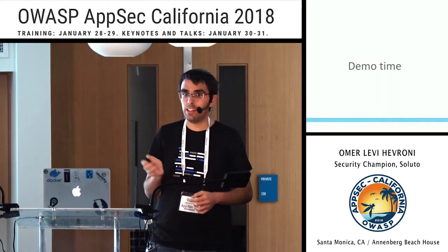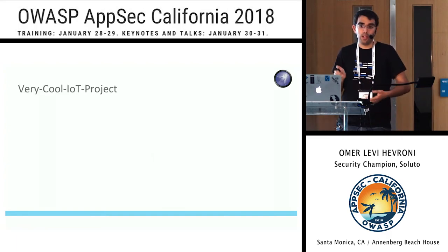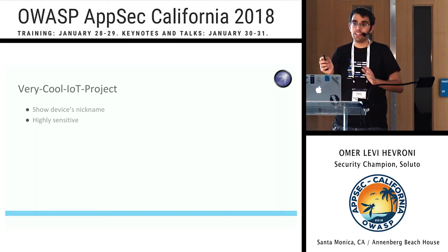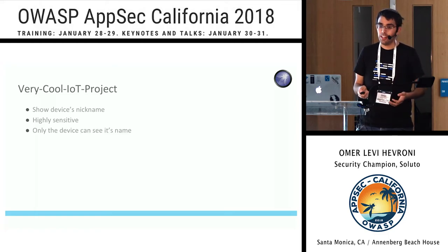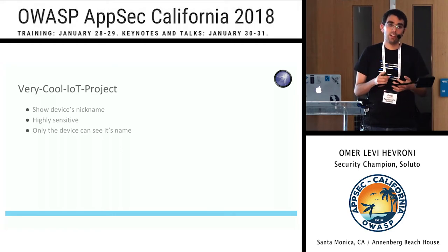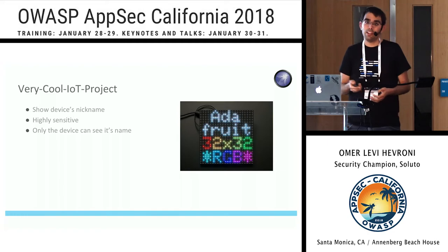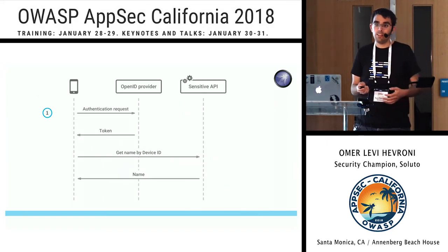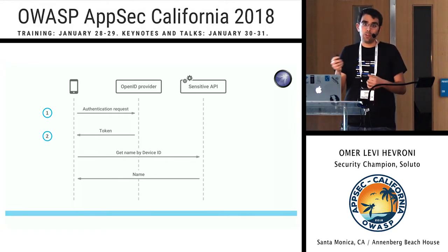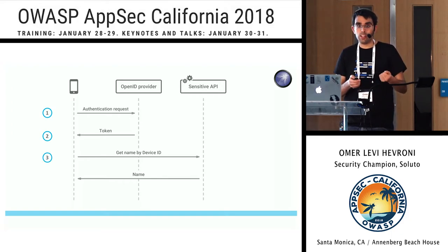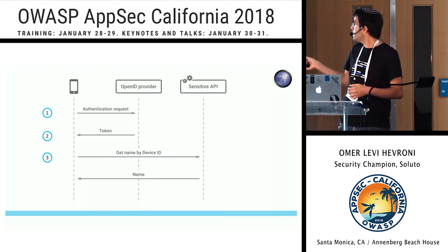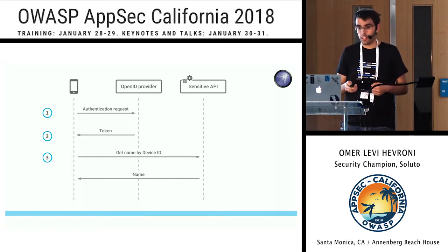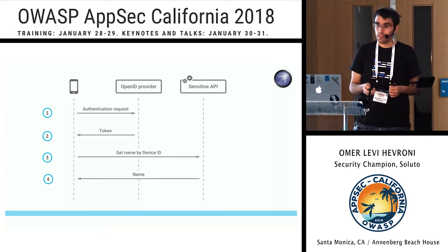Now to the interesting part - let's do a demo. For the demo, let's assume I want to build the most awesome IoT project in the world - it shows a device nickname. Because it's a nickname, it's highly sensitive; we don't want anyone to see what the nickname of your device is. We want to make sure only the device can request its own nickname. The device will perform the authentication request like I showed before, get a token, and use that token to request the nickname. The server - the sensitive API storing the nickname - performs authorization to ensure it's indeed the device and not someone else impersonating it.